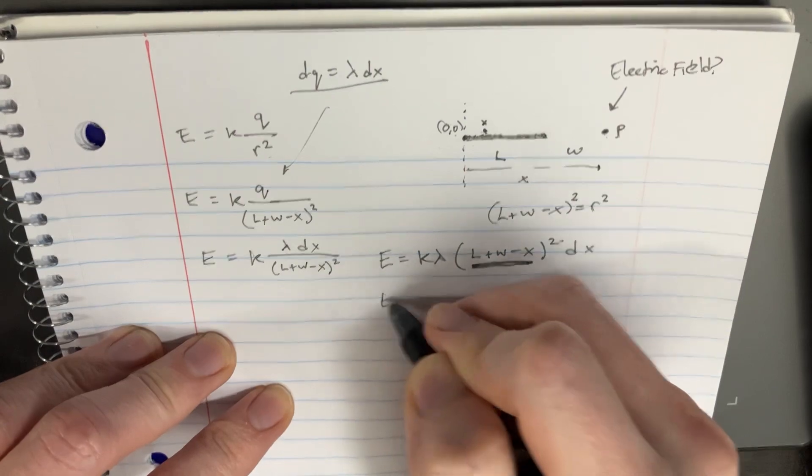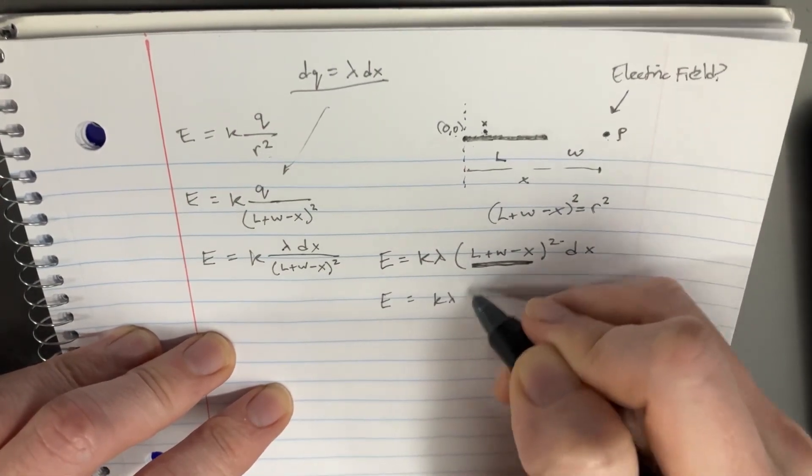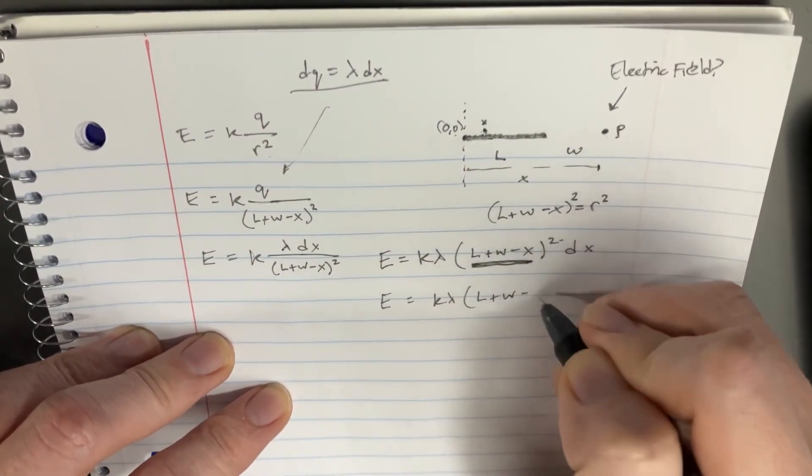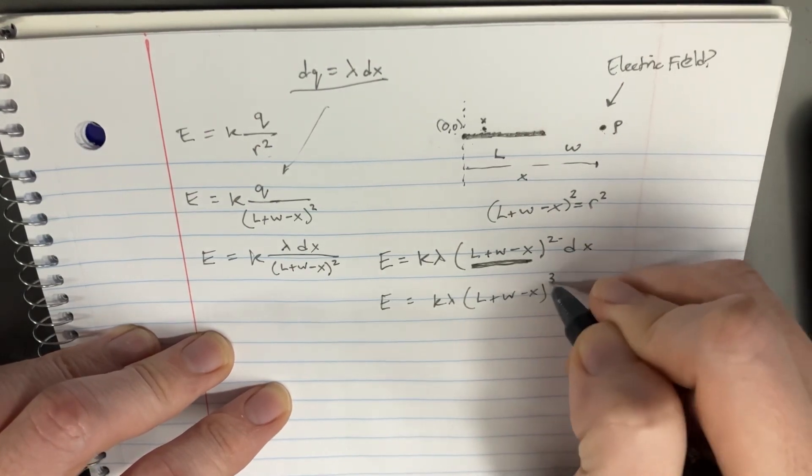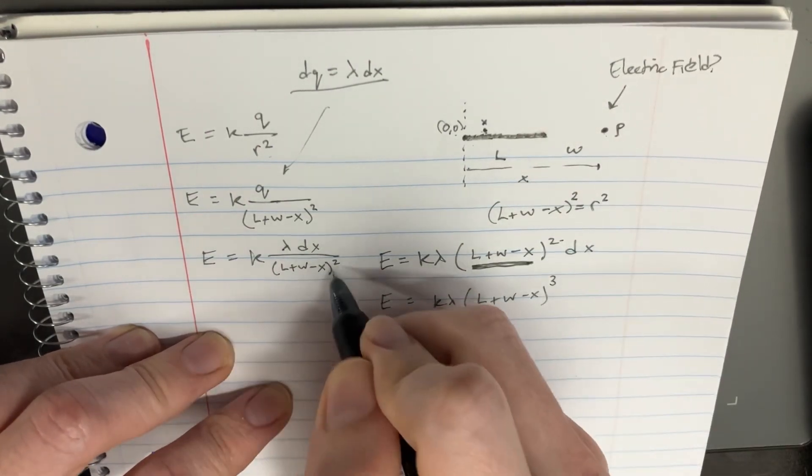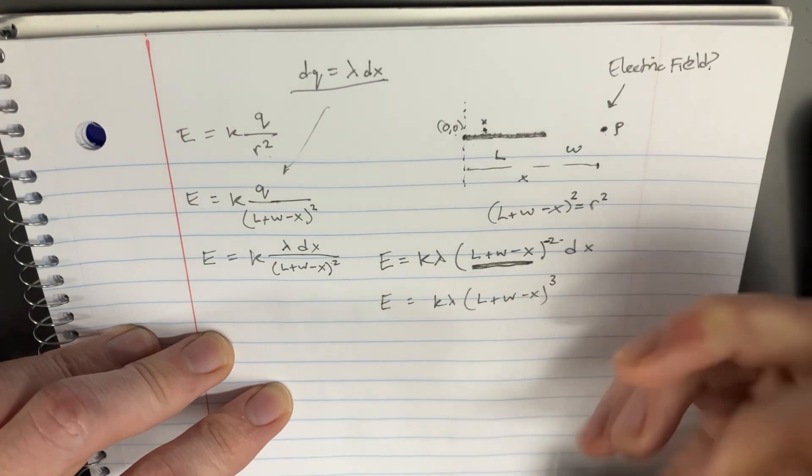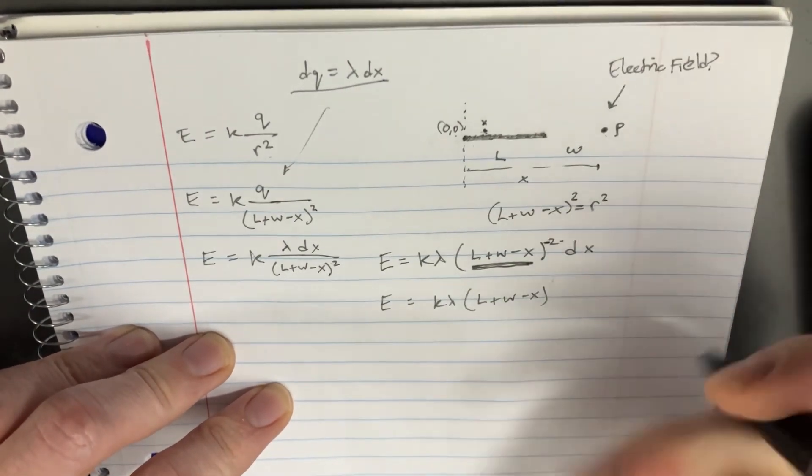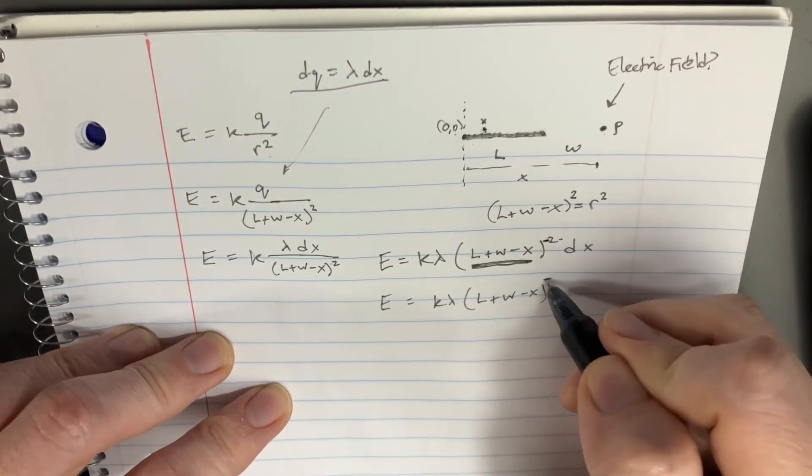We would get something like this. E equals K lambda, and then L plus W minus X plus 1. Here's going to be 3. And you're going to, or sorry, it's actually supposed to be negative 2 here, right? Great, negative 2. But you're going to add 1 to that, so you get negative 1 on top.